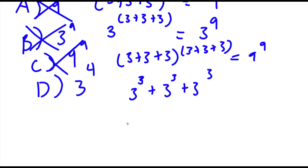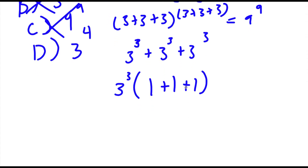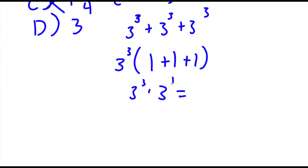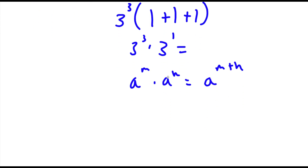The first thing you have to do is factor out 3 to the power of 3. So then you get 3 to the power of 3 times (1 plus 1 plus 1). Now 1 plus 1 plus 1 is 3, so you have 3 times 3 to the power of 3. Now 3 is the same as 3 to the power of 1. If you have something in the form a to the power of m times a to the power of n, this equals a to the power of m plus n. So this would equal 3 to the power of 3 plus 1, which is 3 to the power of 4.